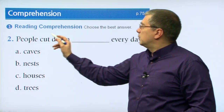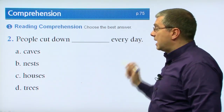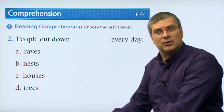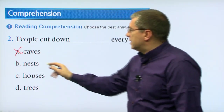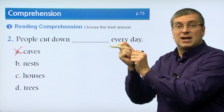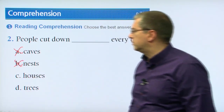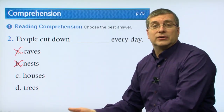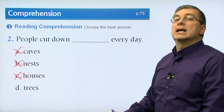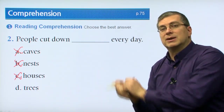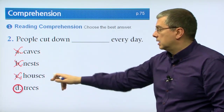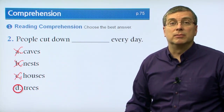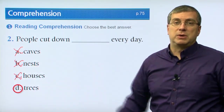Number two: people cut down what every day? Do people cut down caves? You can't cut down a cave - it's a hole in the ground. Do you cut down a nest? No, we don't cut down birds' homes. Do we cut down houses every day? You can destroy a house, but we don't cut down a house. What about a tree? Yes - when people go into the forest and cut down a tree, it falls down. People cut down trees every day. That's the problem - too many trees are cut down and the forests disappear.